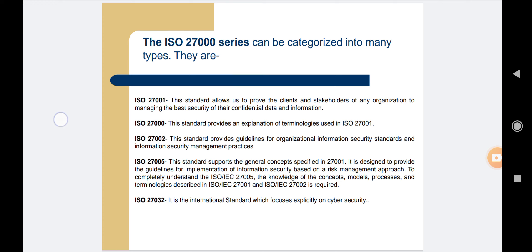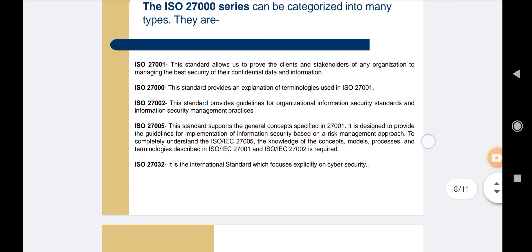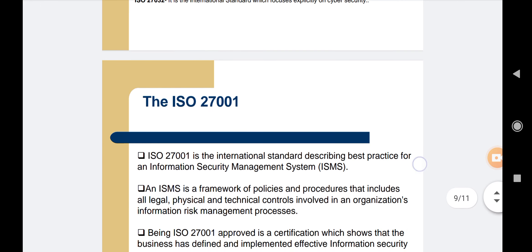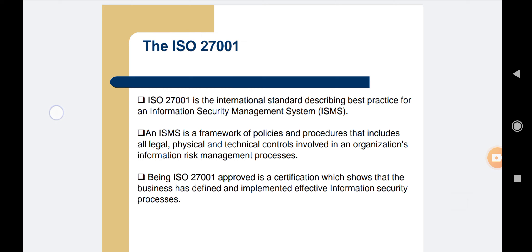The last is ISO 27032, an international standard that focuses explicitly on cyber security. This standard includes guidelines for protecting information beyond the borders of an organization, such as in collaborations, partnerships, or other information-sharing arrangements with clients and suppliers. Now let's learn about the ISO 27001 standard in detail.